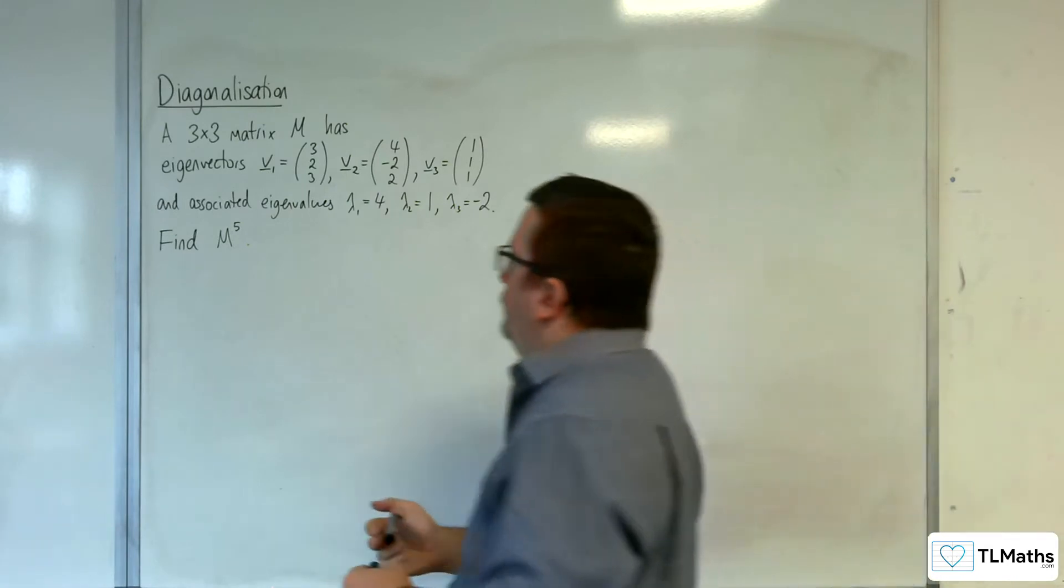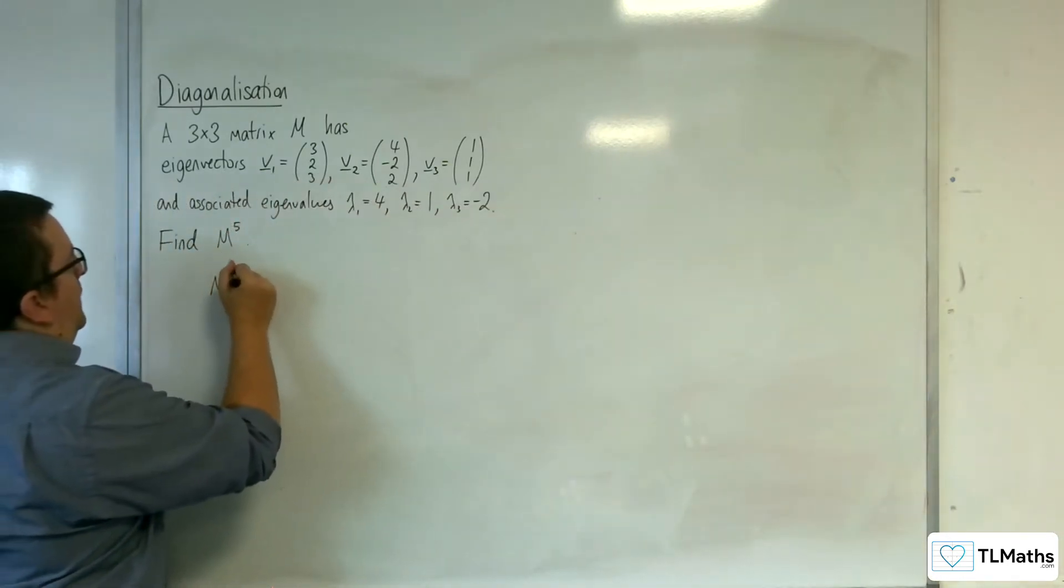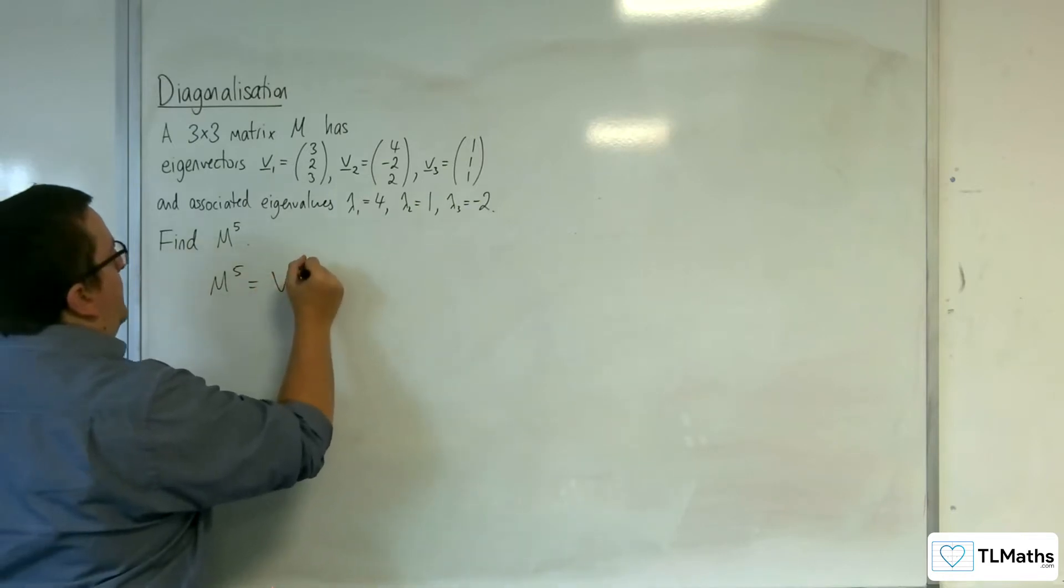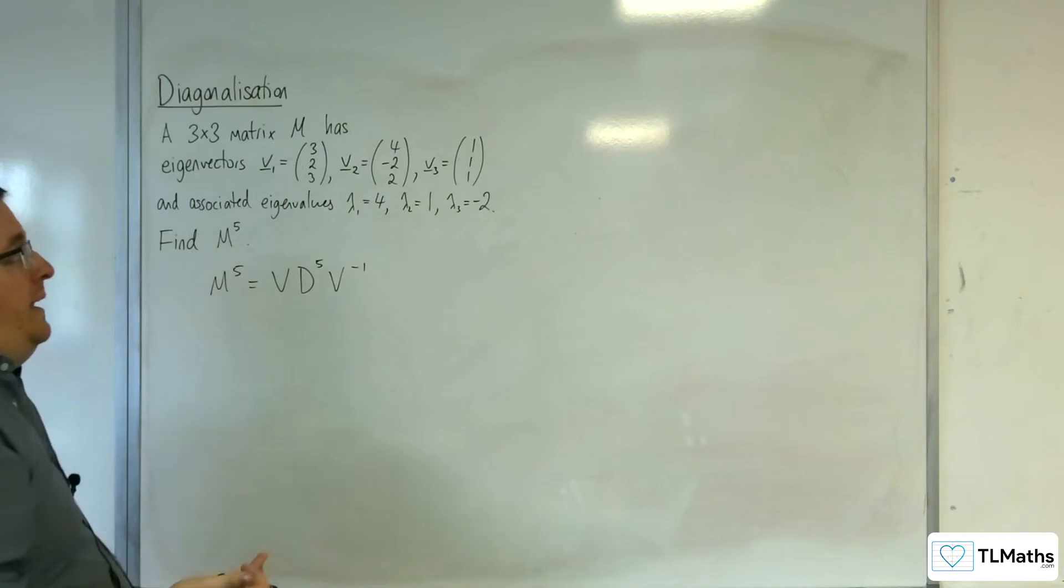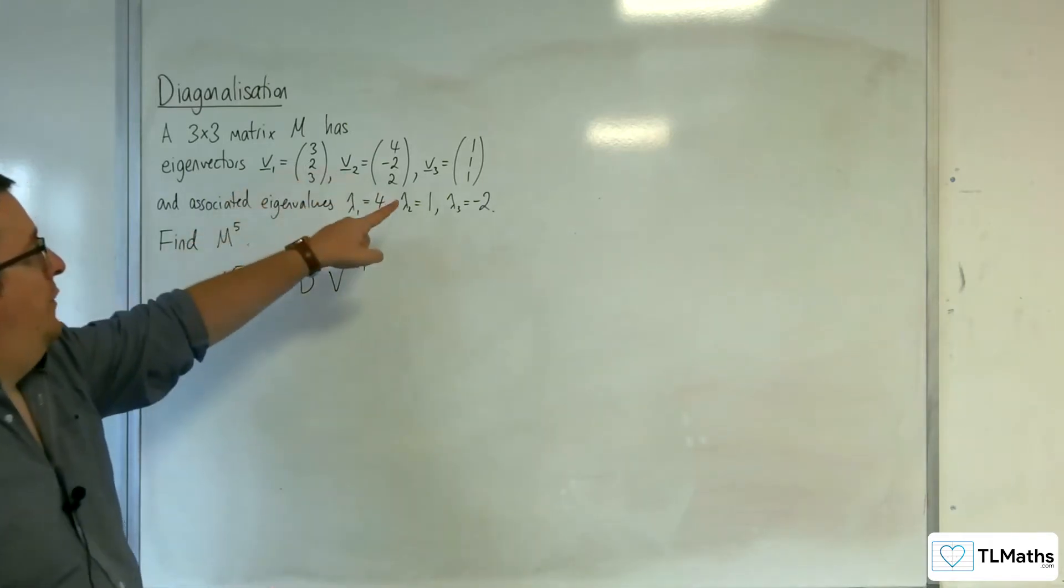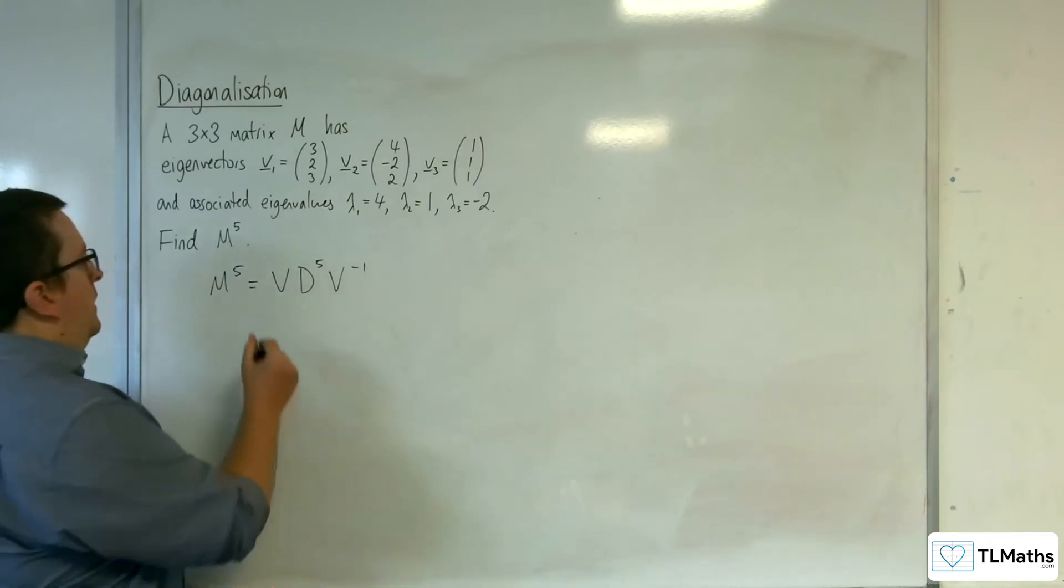So we know that M to the power of 5 is going to be equal to V D to the power of 5 V to the minus 1, where V is the matrix of its eigenvectors and D is the diagonal matrix of its eigenvalues. So this is